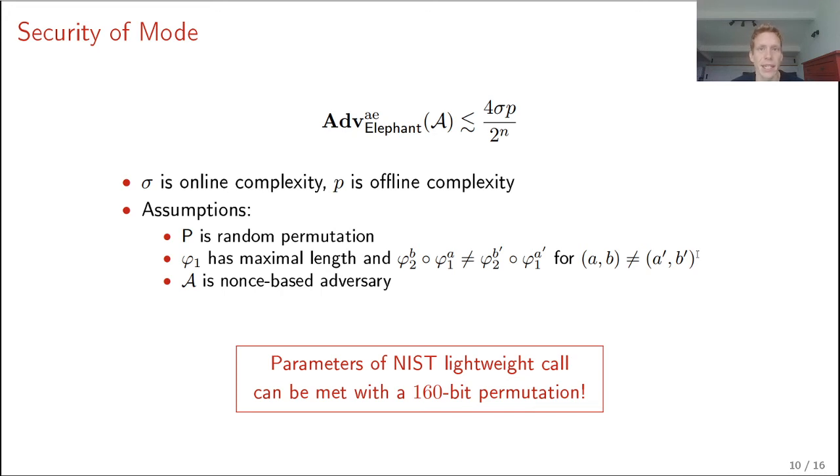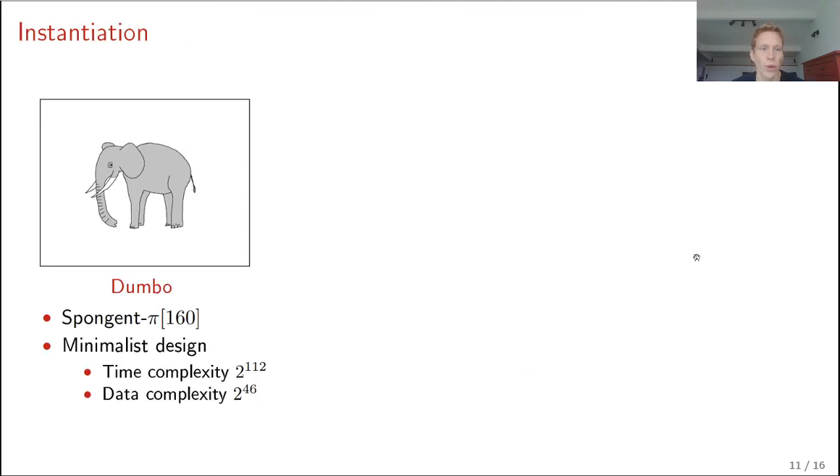And this brings me to our instantiation. So we have three instantiations of Elephant. Namely, Dumbo is the first one. Dumbo is Elephant with sponge and 160-bit permutation. This is the minimalist design. So it has a time complexity of security up to a time complexity of 2 to the 112 and a data complexity of 2 to the 46 blocks, which roughly corresponds to 2 to the 50 bytes as prescribed by the NIST call.